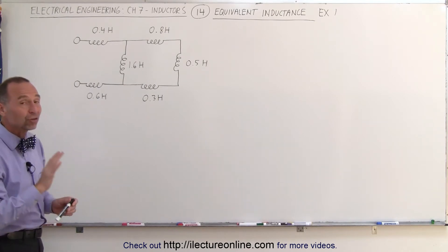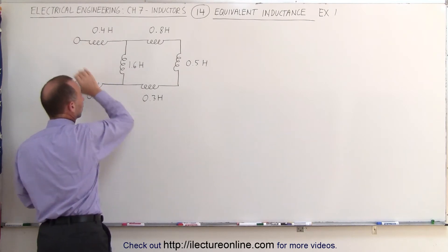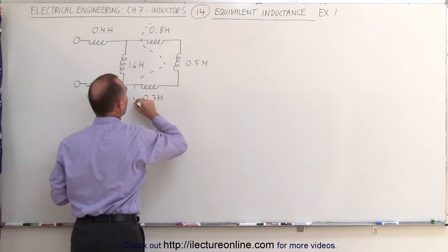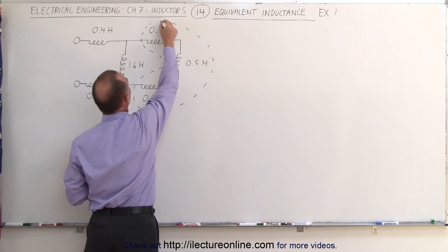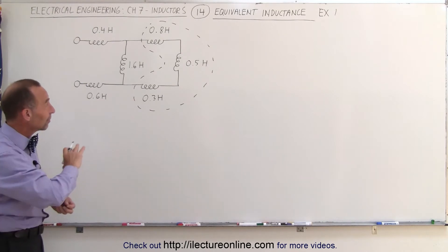All right, how does this work? We start with the inductors as far away from the input to the circuit. So we take the very end, we take these three inductors right here, because they're all in series on the outermost branch. When inductors are in series, we simply add them together.